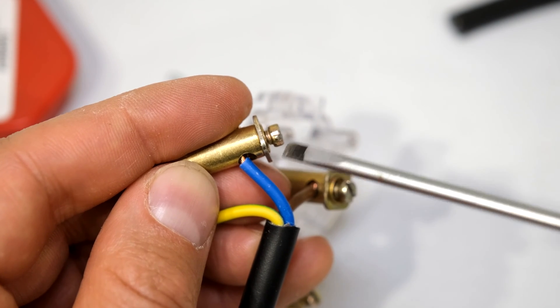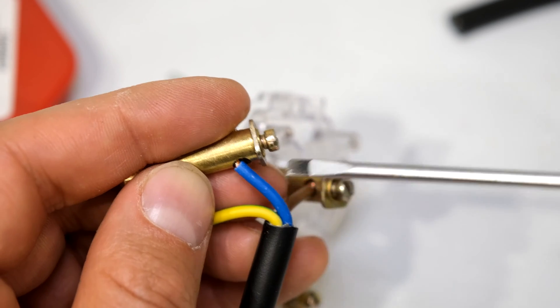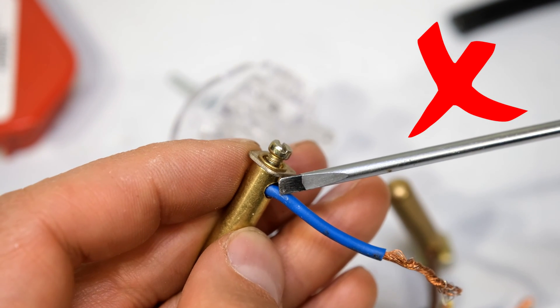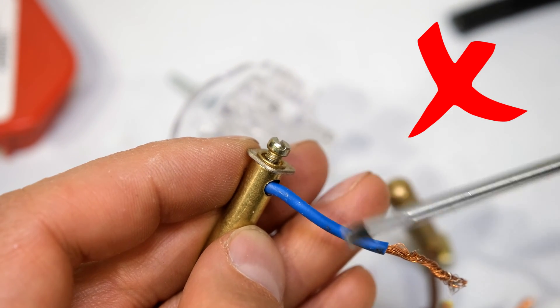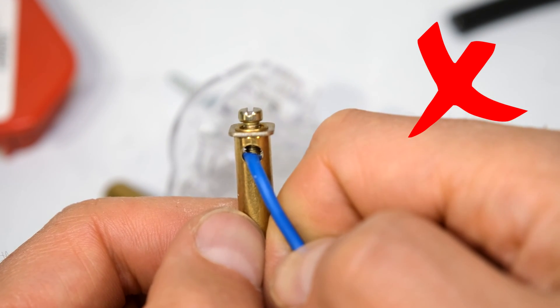Please note that the screw must fasten onto the copper. The screw must not fasten onto the jacket. If the screw is only fastened onto the jacket, it will cause arcing and heating of this wire. For example, if you look inside there, you can see that the screw is fastened onto the jacket. That is incorrect.